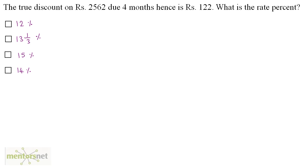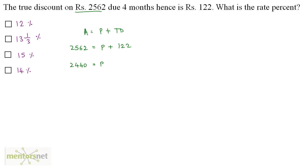The true discount on rupees 2562 due 4 months hence is 122 rupees. What is the rate percent? We have been given the future worth, the amount, as 2562. Amount equals present worth plus true discount. So 2562 minus 122 equals 2440, which is the principal P. The formula for true discount is PNR upon 100, so P equals true discount times 100 divided by N times R.